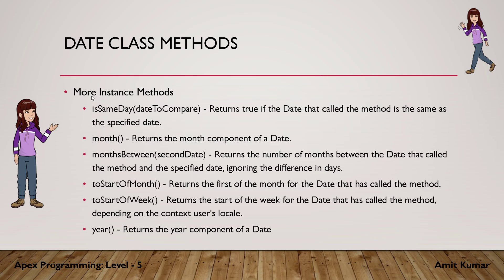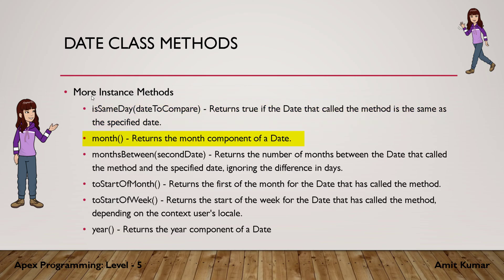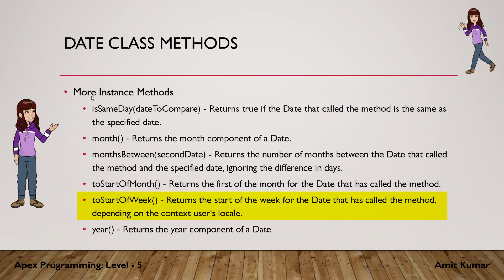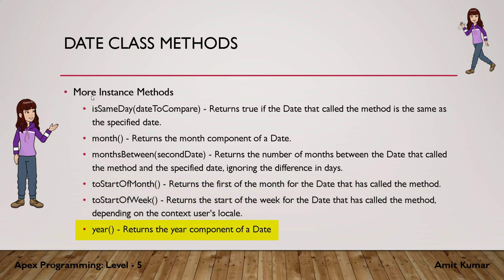The isSameDay method accepts a date as parameter and returns true if the date that called the method is the same as the one passed as parameter. The month method returns the month component of a date. monthsBetween accepts a date as parameter and returns the number of months between the two dates — it will only tell you the difference in months and will not consider the days in between. toStartOfMonth returns the first day of the month for the date that called the method. toStartOfWeek returns the start of the week for the date that called the method. Both depend on the context user's locale. The year method returns the year component of a date.